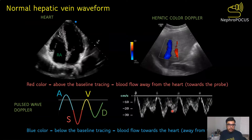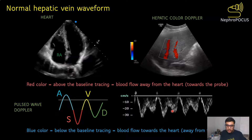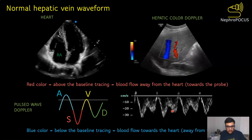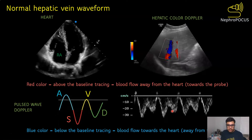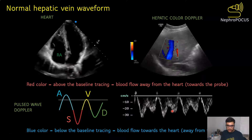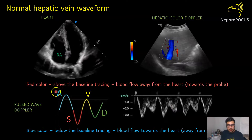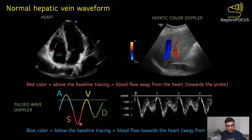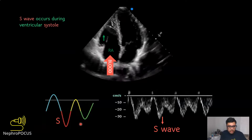Let's look at how the hepatic vein waveform appears under normal conditions and how it changes with increasing right atrial pressure. In spectral Doppler, red color is above the baseline and blue color is below the baseline. The hepatic vein waveform has these distinct waves: A, S, V, and D — pretty similar to the jugular venous tracing, actually.